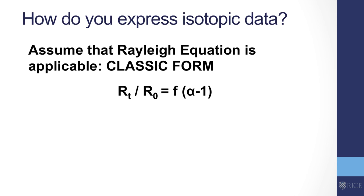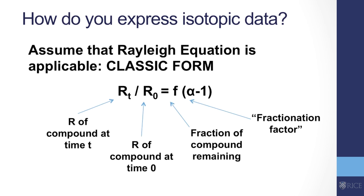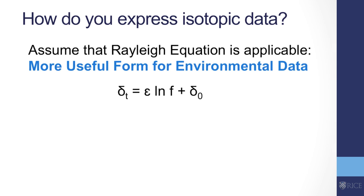The change in isotopic ratios is assumed to follow the Rayleigh equation, shown here in classic form. If a compound is being degraded and undergoing fractionation, the isotopic ratio R at any time can be calculated from the initial R value, the fraction of the compound remaining F, and the alpha term, which is called the fractionation factor. We rearrange this equation slightly when performing CSIA to use the DEL convention shown earlier. The DEL value of the compound at any time equals the initial DEL value plus the product of F — the fraction of compound remaining — times epsilon, the enrichment factor, sometimes called the fractionation factor.